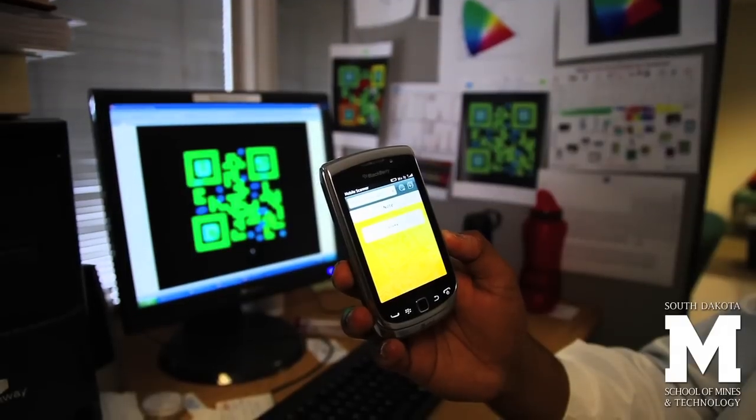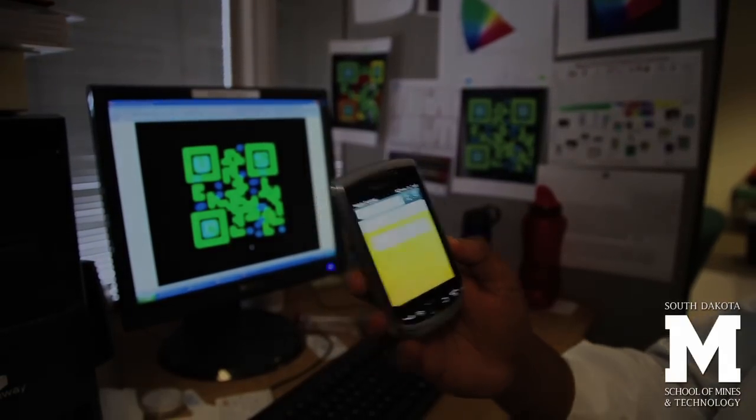We have different sets of upconverting nanoparticles. One upconverts into green, one upconverts into blue. We use both of them to create these upconverting QR codes as I showed you in the video.